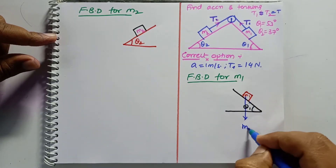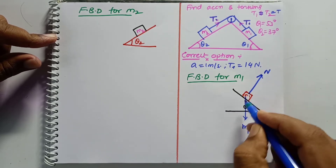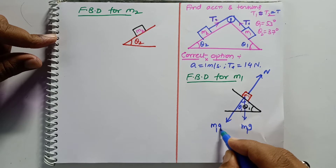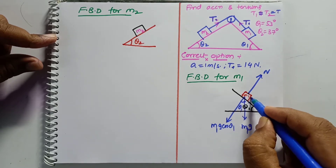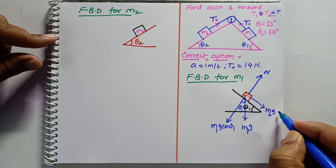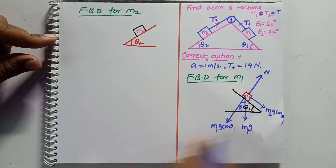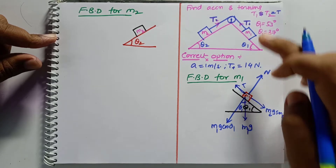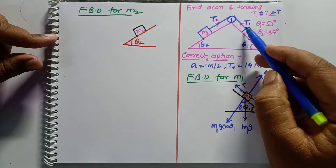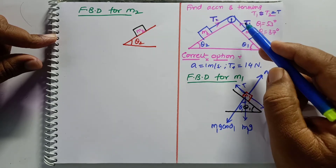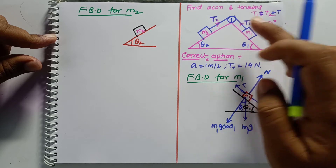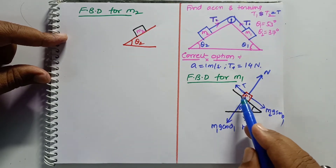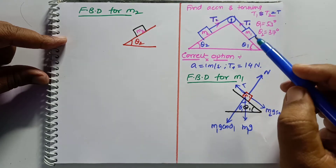Taking downward force m1·g, the normal reaction acts at angle θ1, so we can write m1·g·cosθ1 in that direction. In this direction, m2·g·sinθ1 is acting. In this direction, tension T is acting. Tension is T only because there is only one single string here — if there were two different strings, tensions could be different, but with one string, tension is the same throughout.